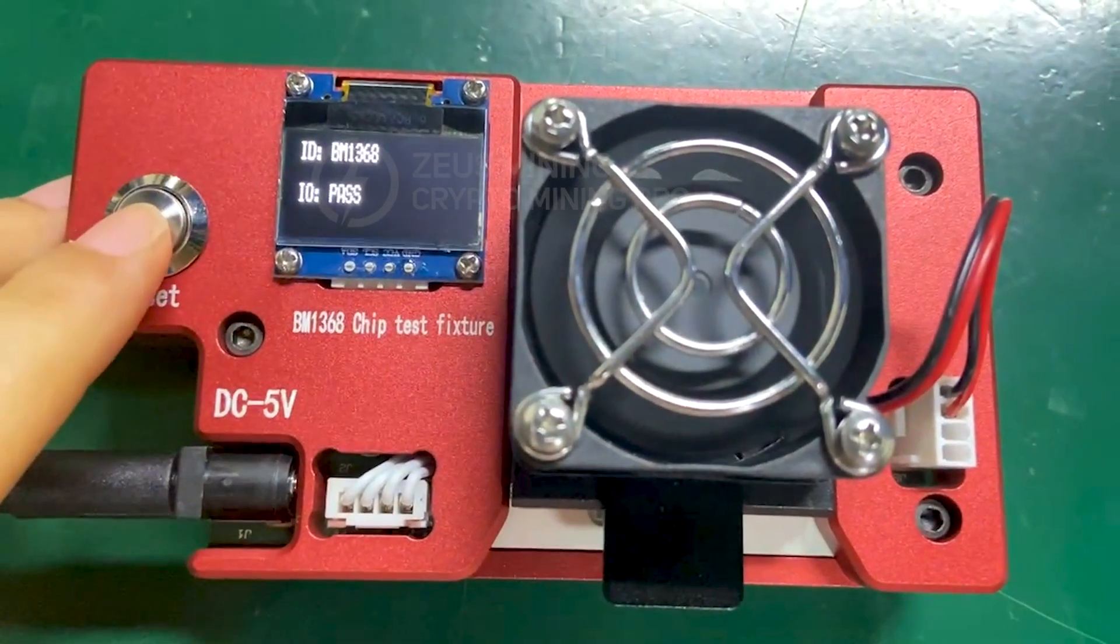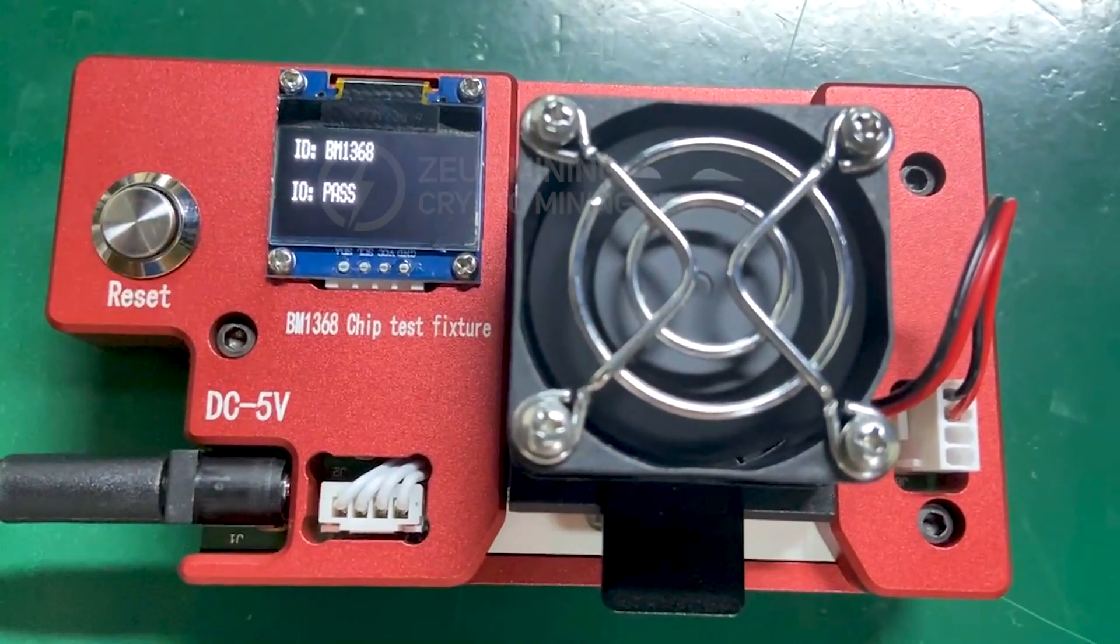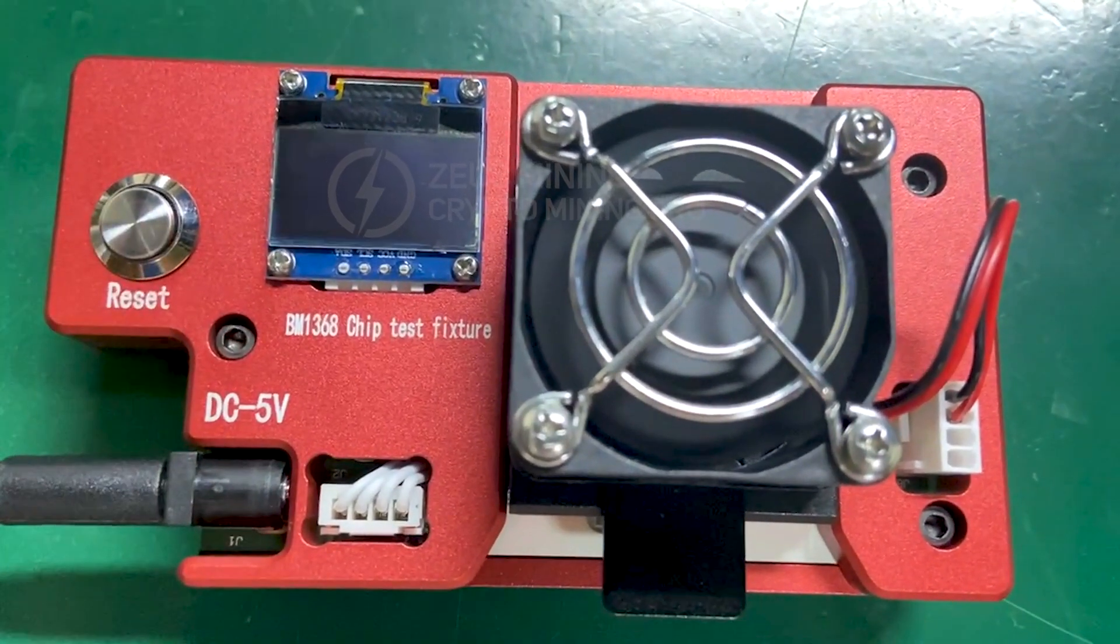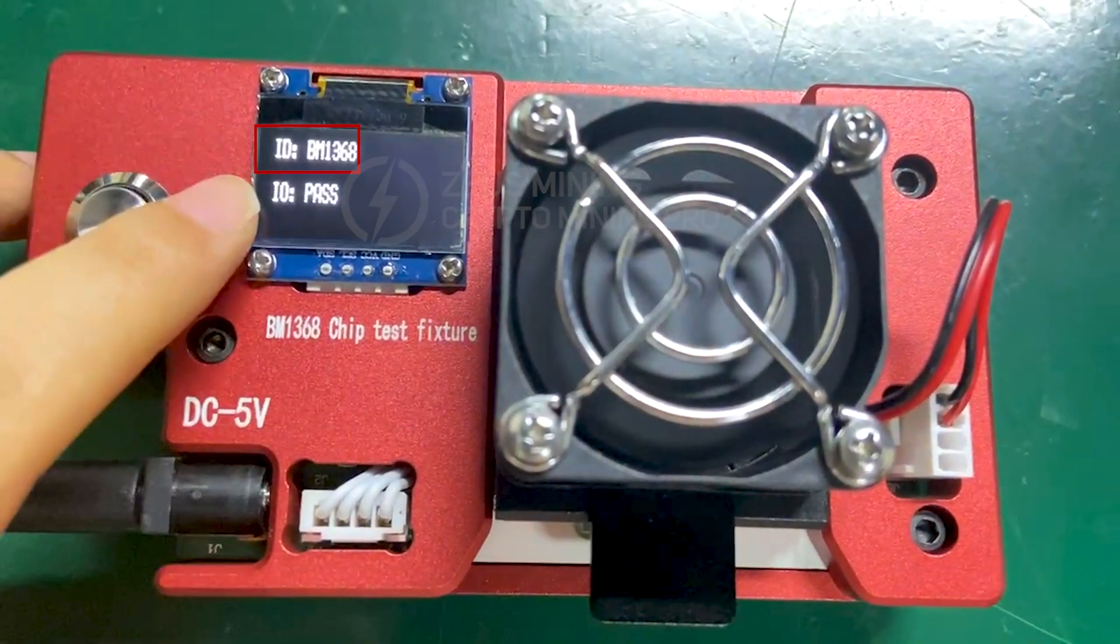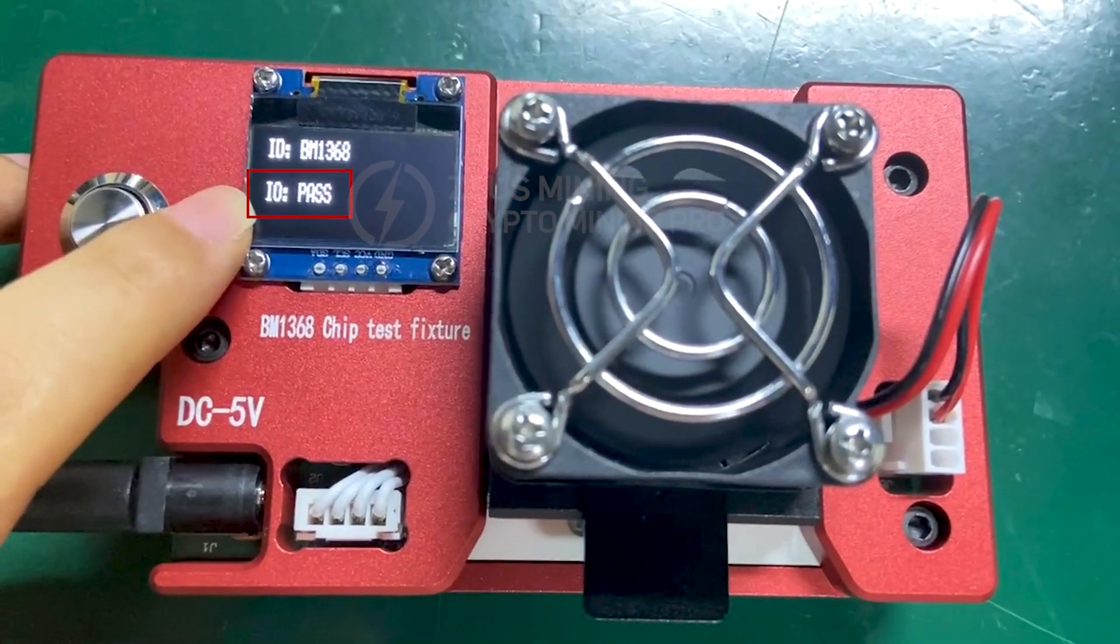Press the test button. We can see that the upper row shows the chip model and the lower row shows the test result 'pass,' indicating that this is a good chip.